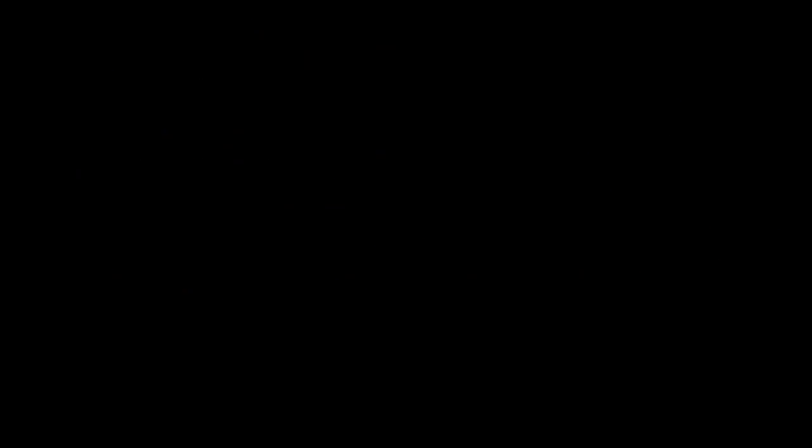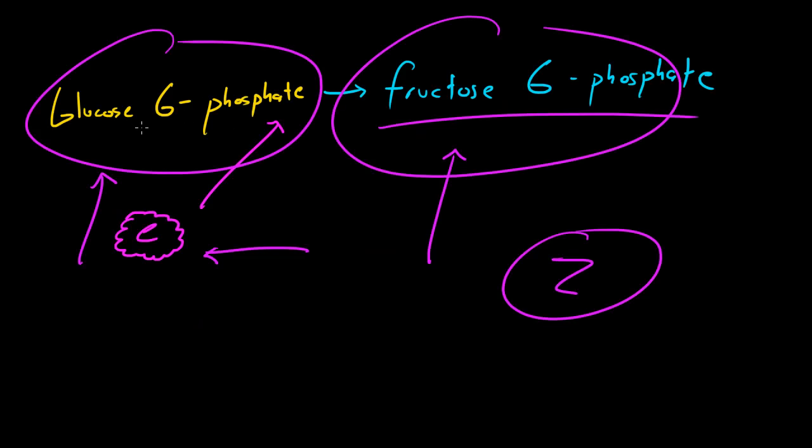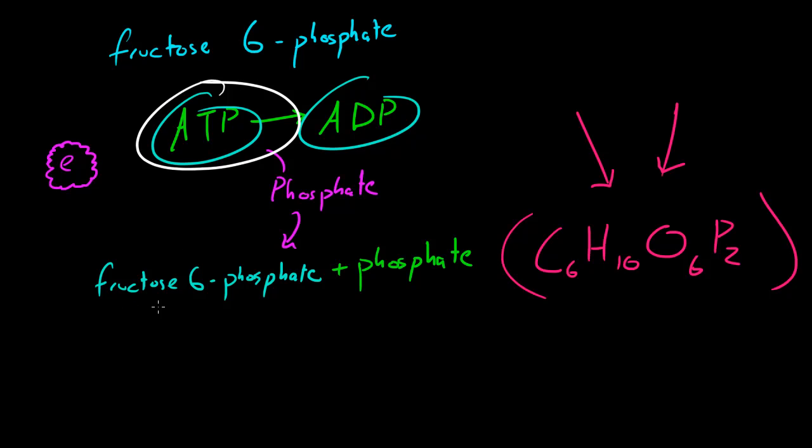This is what we call the investment phase, because so far all we did is we had to use or invest two ATPs and we didn't even create any new ones yet. Step one of breaking down glucose and adding a phosphate, step two of converting glucose 6-phosphate into fructose 6-phosphate, and step three of taking fructose 6-phosphate and adding another phosphate. This entire process we used or invested two ATPs, and that's why steps one through three of glycolysis is called the investment phase. It takes money to make money.